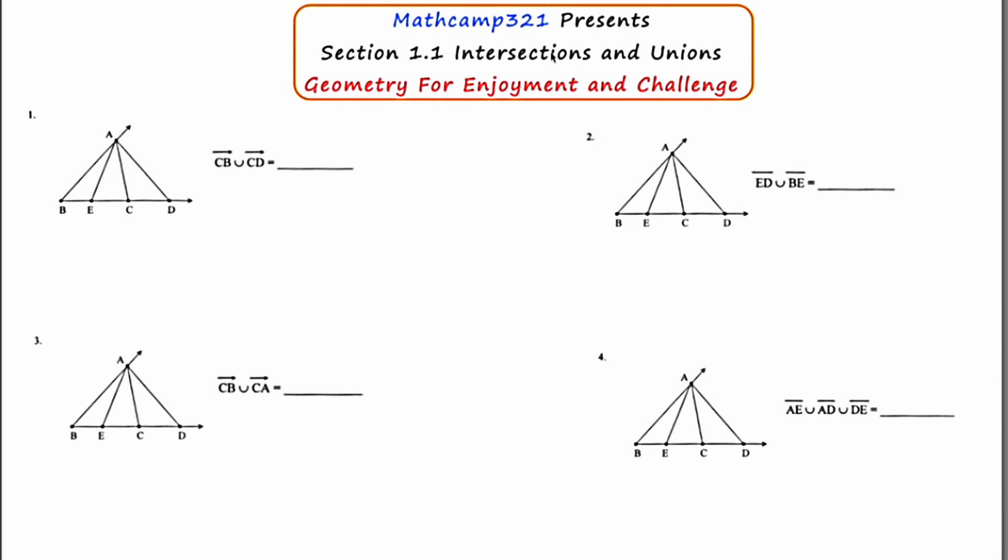To start, let's talk about what is an intersection. An intersection represents the point or points in common between two or more geometric figures. So I'm just going to write down the phrase points in common. And the intersection symbol is an upside down U.